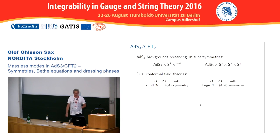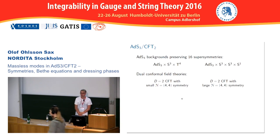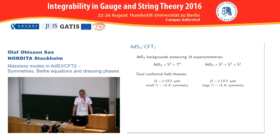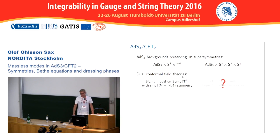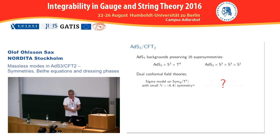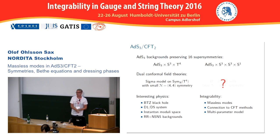There are two AdS3 backgrounds that preserve 16 supersymmetries: AdS3×S3×T4 and AdS3×S3×S3×S1. These are dual to 2D CFTs with (4,4) superconformal symmetry, either the small or the large conformal symmetry. In the first case the AdS3×S3 background is dual to a deformation of a symmetric N orbifold on T4. In the second case the dual CFT is much more subtle and still not very well understood.